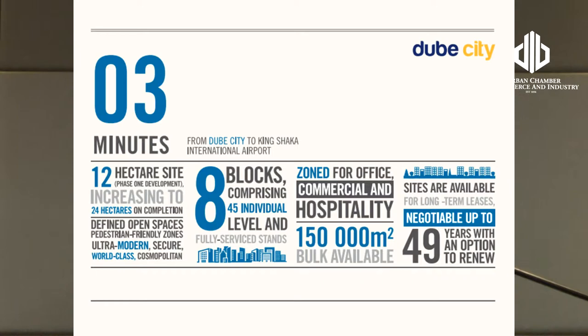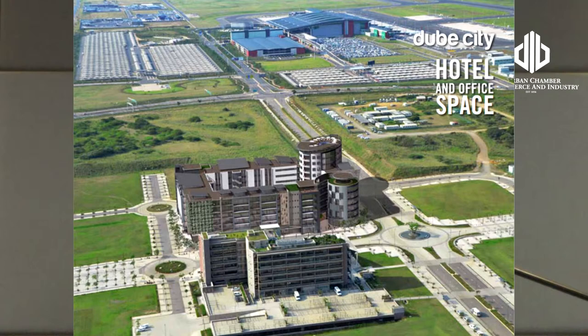We're really just three minutes away from the airport. Dubé City follows sustainable development principles, creating an ultra-modern urban green area hub, immediately adjacent to King Shaka Airport. We've benchmarked a four-star green rating for the whole development. The first phase comprises 12 hectares divided into eight blocks, providing 45 fully serviced stands supported by a fully reticulated fibre optic cable — infrastructure already laid down to support your development needs.